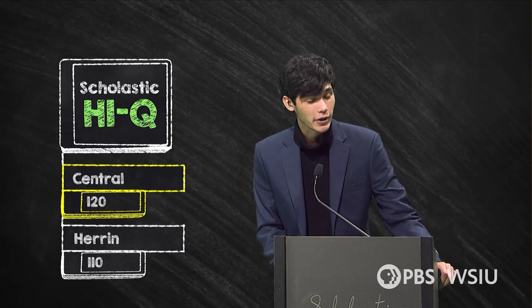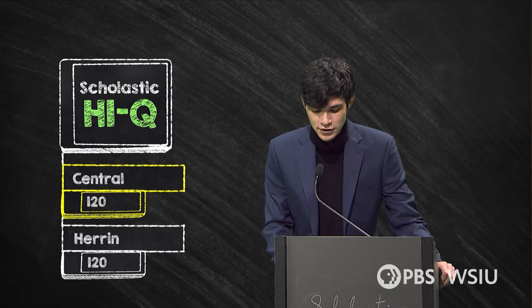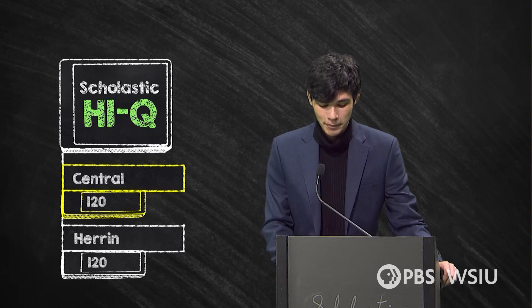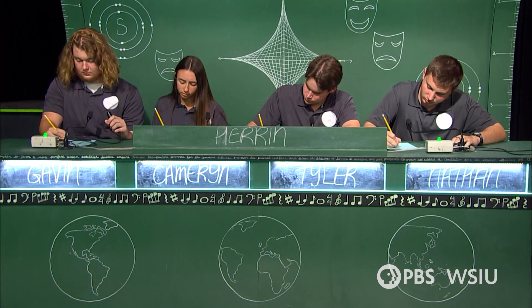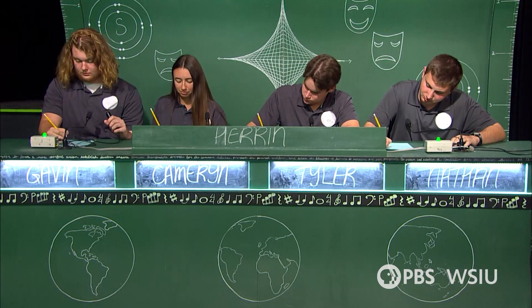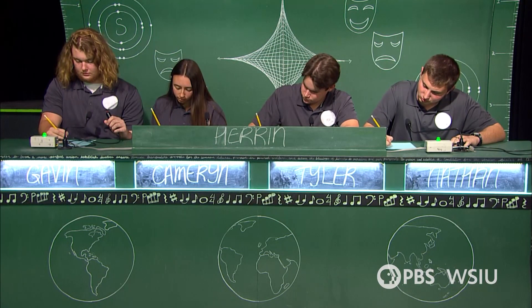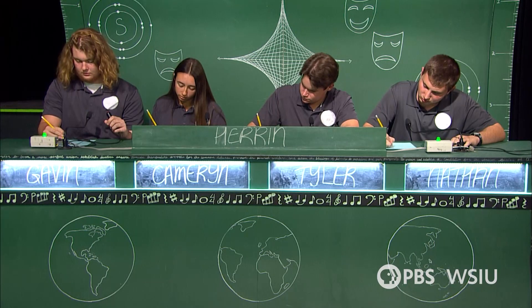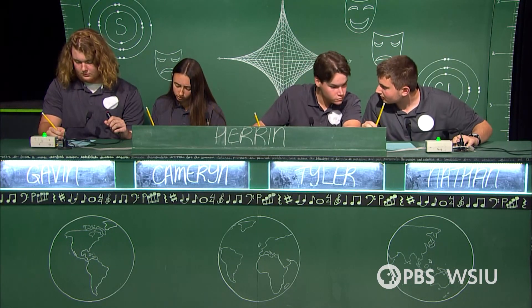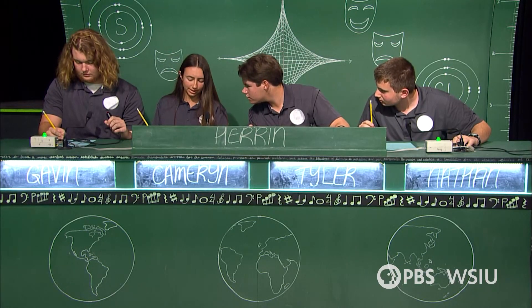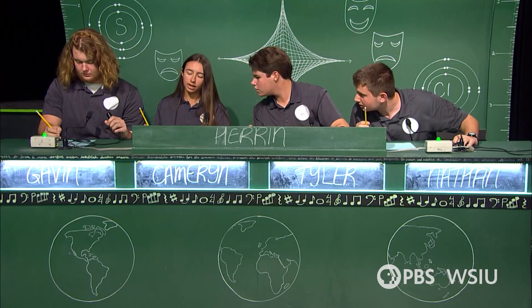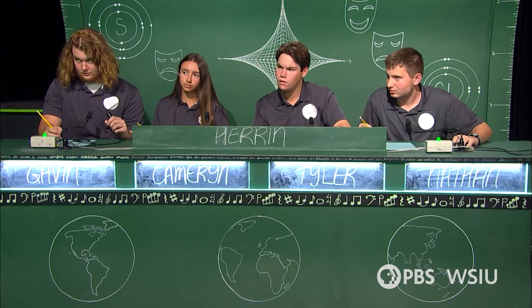For your bonus, pencil and paper ready: what is the average speed in miles per hour of a bicyclist who travels 4.5 miles in 15 minutes? Answer: 18 miles per hour — correct.